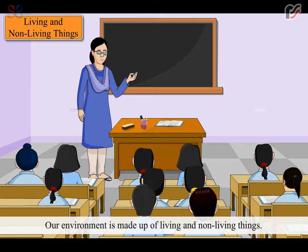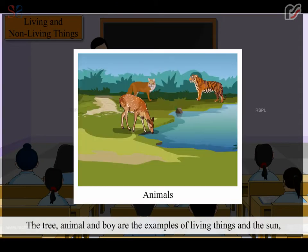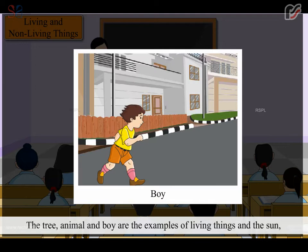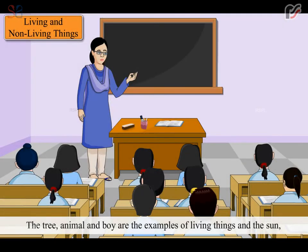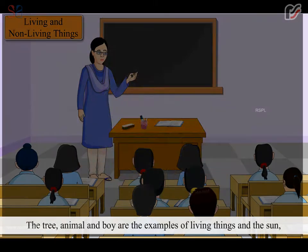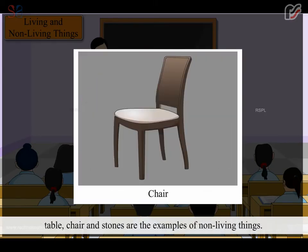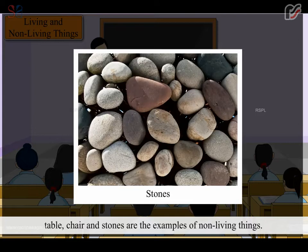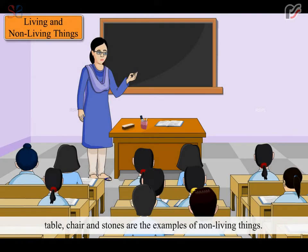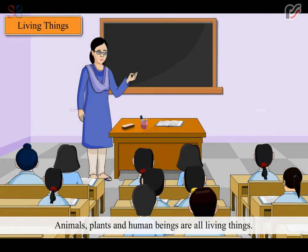Our environment is made up of living and non-living things. The tree, animal and boy are examples of living things. The sun, table, chair and stones are examples of non-living things. Animals, plants and human beings are all living things.